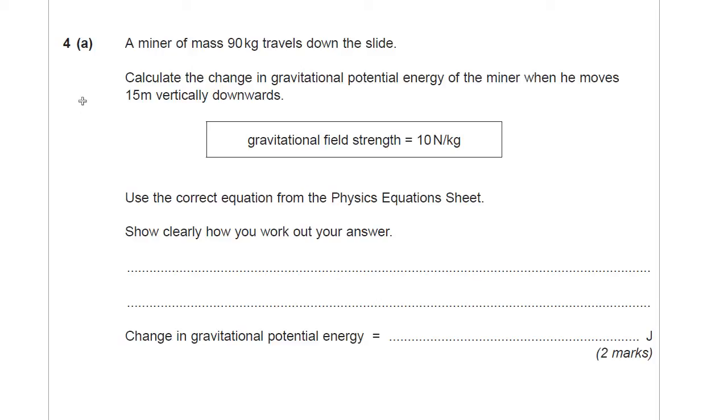Gravitational field strength is 10 newtons per kilogram. It tells you to use the correct equation from the physics equation sheet and show clearly how you would work out your answer. I'll just give you a moment to have a go at that. Go to your physics equation sheet, find the equation you think most appropriate. Bear in mind you know what the mass is, you know a height, and you know gravitational field strength. And you want to work out gravitational potential energy. So I hope you found from the equation sheet that gravitational potential energy is equal to mass times gravitational field strength times height. Now it's just a simple case of putting the numbers in where they go. But before we do that, let's check the correct units.